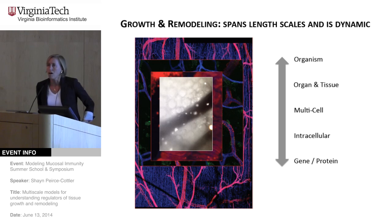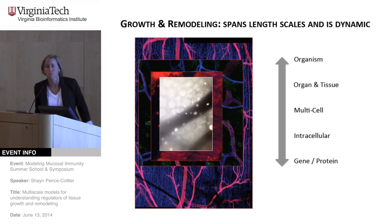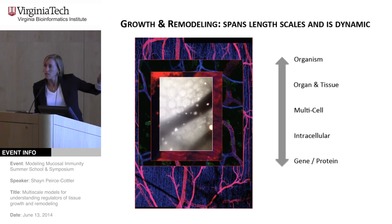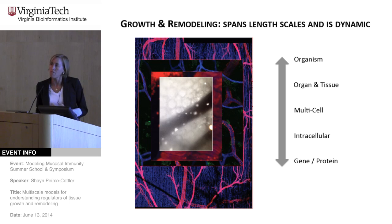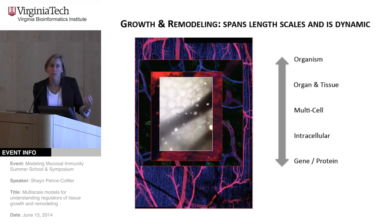When we think about growth and remodeling, these processes really span length scales and they're very dynamic, changing over time. If we look at just the structure of the blood vessels of our body, it's very beautifully organized. As you zoom in with your microscope, you can really begin to appreciate that at different length scales you get interesting patterns — evidence of different functions, and suggestive of how their formation came about as a result of biochemical, electrical, or mechanical signals.